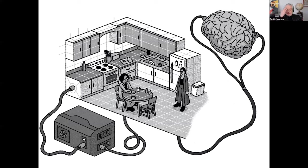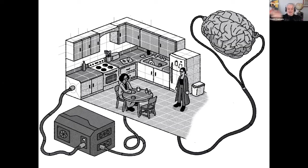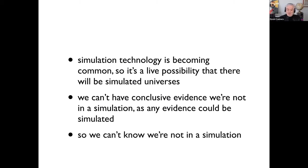In the Matrix, we have Trinity — a bit like a brain in a vat, with a biological brain connecting to the simulation — and the Oracle, who is a pure simulation running on a computer. This illustrates two different ways we could turn out to be in a simulation: as a brain or as a computer. Simulation technology is actually becoming common, moving from science fiction to real technology. Give it 50 or 100 years and we'll have simulated universes indistinguishable from physical ones.